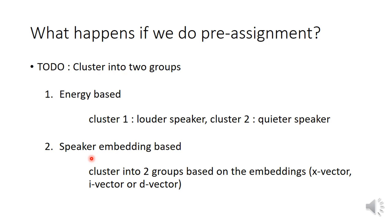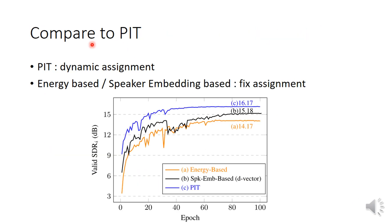The second method is based on clustering of speaker embeddings, where we extract the embeddings of each ground truth in the mixture and cluster them into two groups. Comparing these two fixed assignment methods to PIT — where the PIT assignment is dynamic and the two proposed methods are fixed — we can see from the figure below that neither of the two fixed assignment methods can perform as well as PIT. The curves show PIT in blue, speaker-embedding-based in black, and energy-based in orange. So PIT seems necessary from this viewpoint.